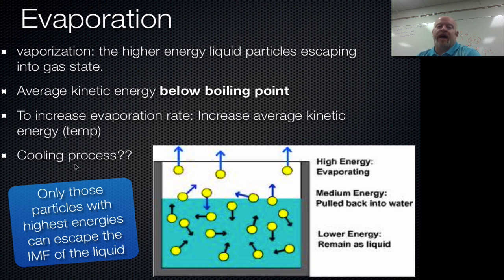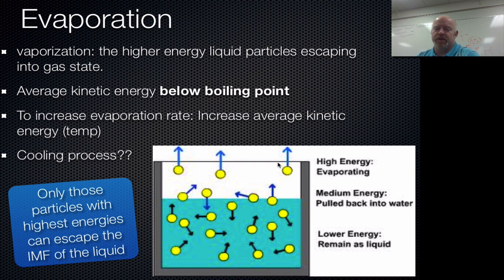Once the sweat gets outside of our bodies, the highest energy particles evaporate first. As a result, the net energy of that liquid goes down, which is a cooling process that starts to cool our skin. If we continue to generate heat, we keep excreting more liquid until we've properly cooled our bodies, or until we stop working out, or until we get dehydrated and suffer heat exhaustion. Only the highest energy particles escape intermolecular forces to leave the liquid. In an open container, they come to the surface and fly out — that's evaporation. Lower energy ones stay as liquid; medium energy ones get to the surface and get pulled back in.